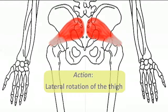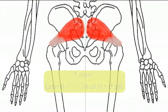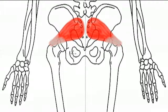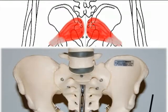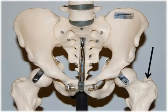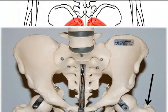They are all lateral rotators of the thigh at the hip joint, and they're all located deep to the gluteus maximus. In addition, their insertion point on the greater trochanter is also the same.